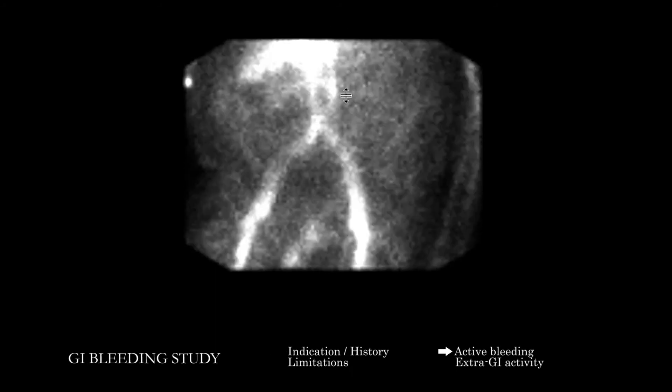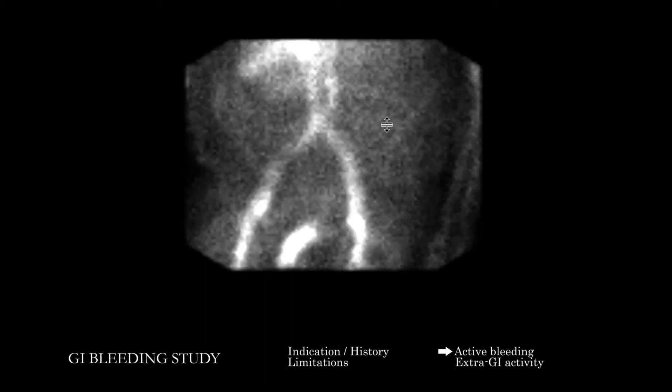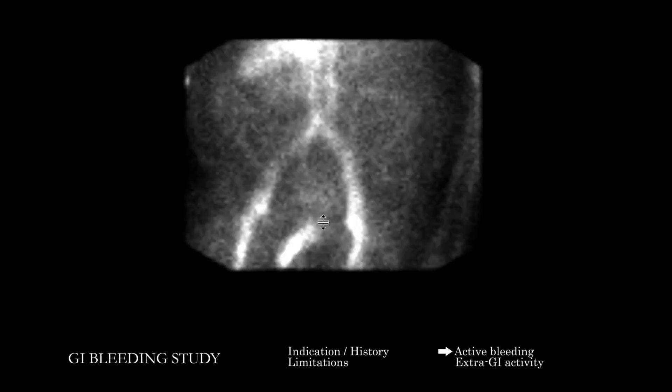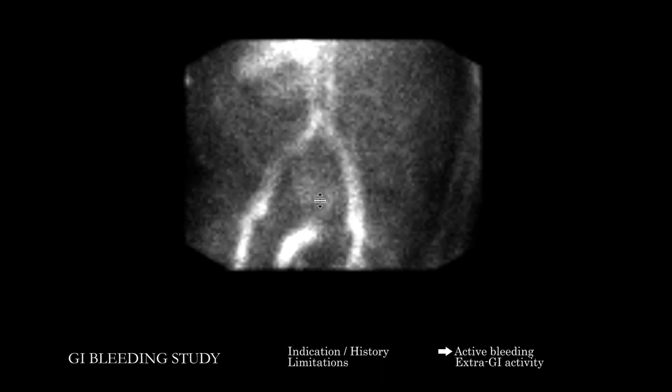Here we have the raw or dynamic images of a GI bleeding study. Once you have a sense of what's going on with the patient, we have here the first couple images — the blood pool or flow phase — and then we transition into time points where we expect active GI bleeding to occur. You can see initially the vasculature, and then as you go on there is some background activity. Here we see a non-motile activity projecting in the lower pelvis, and you can almost see the left upper extremity there.